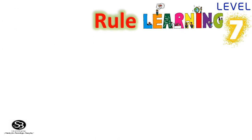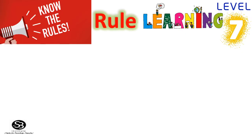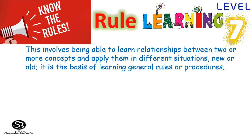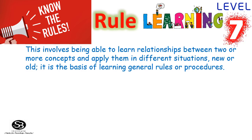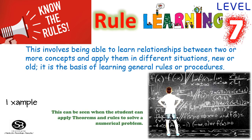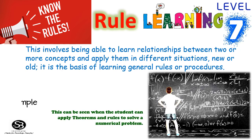Rule Learning involves being able to learn the relationships between two or more concepts and apply them in different situations, whether new or old. It is the basis of learning general rules or procedures. For example, this can be seen when a student applies theorems and rules to solve a numerical problem.